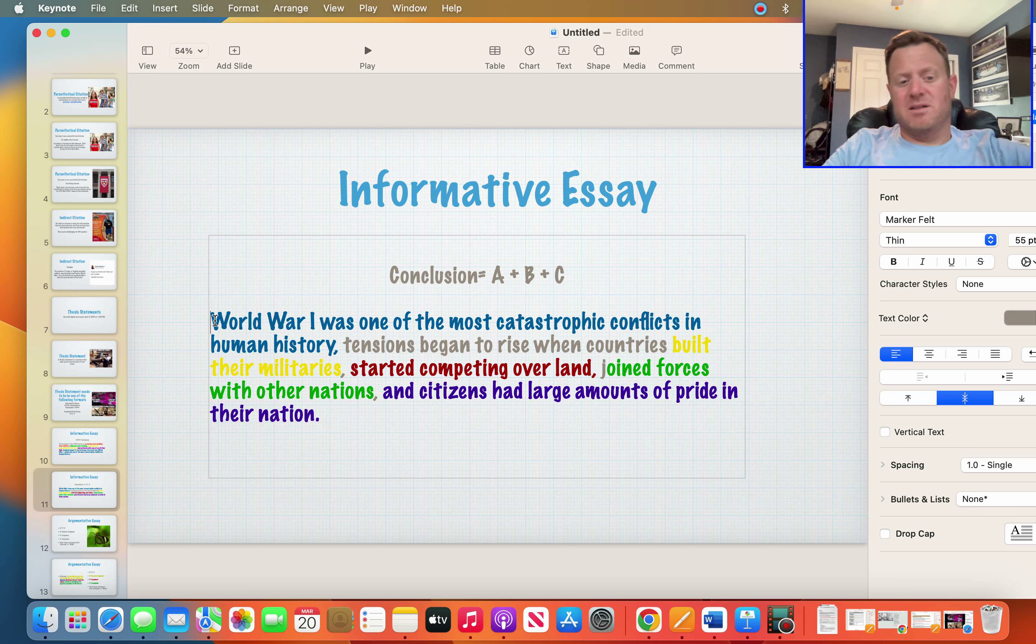Once again, this right here is the conclusion. A, B, C, I kind of went with D too. Those are right here. And again, informative essay is easy. What you're really looking for is this: What's your main thing? If there's one thing that you want somebody to learn, what is it? And then the three or four big reasons why you came to this conclusion.